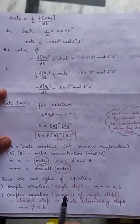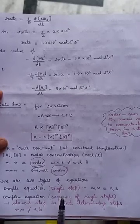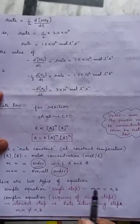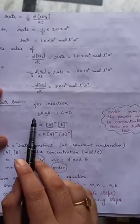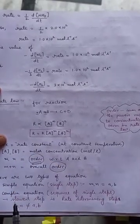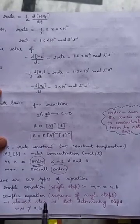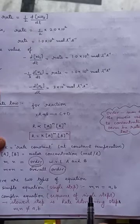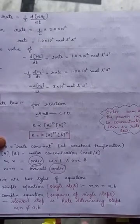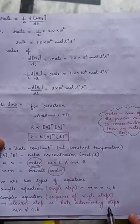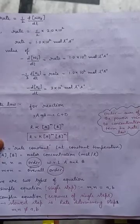Simple equation is of single step which means the reaction occurs in a single step. Here M and N are equal to A and B, and the other reaction is complex. Complex reaction is a sequence of single steps. Among all the sequence of single steps, the slowest step is the rate determining step. So M, N is not equal to A and B.